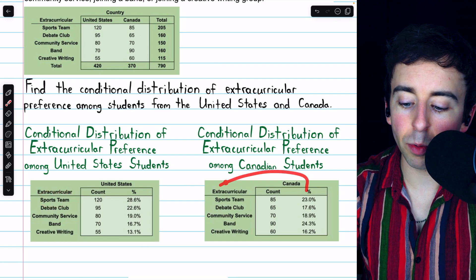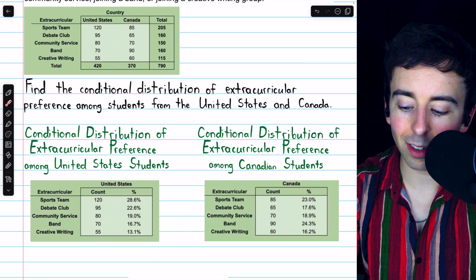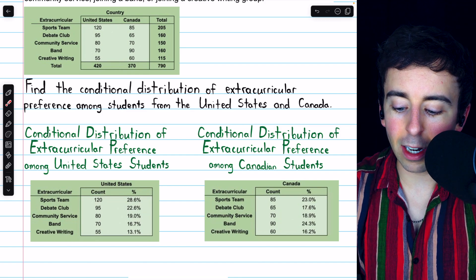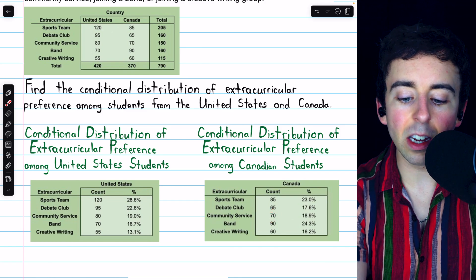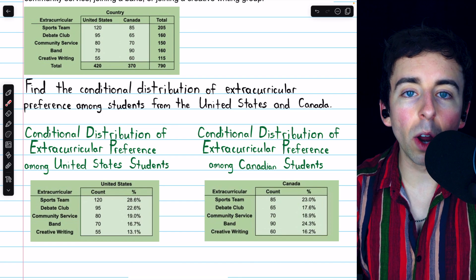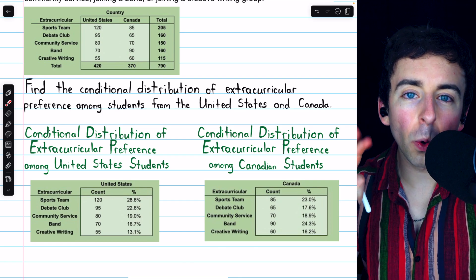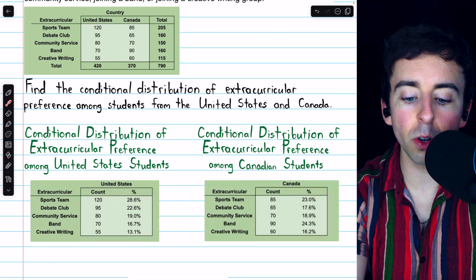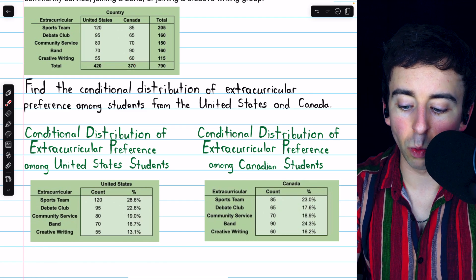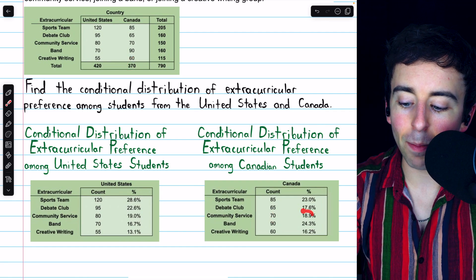As another example, if we look at the conditional distribution for the Canadian students, 18.9% is calculated by taking 70 and dividing it by 370. When we're looking at the conditional distribution of Canadian students, our total number of students is 370 — the number of Canadian students — which is why we divide 70 by 370 to get that percentage.